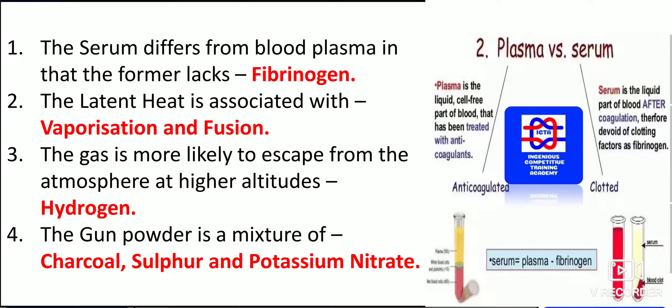The gas more likely to escape from the atmosphere at higher altitudes is hydrogen. Hydrogen is the one which directly escapes and moves away from the earth, and it is found in maximum quantity in the sun area.